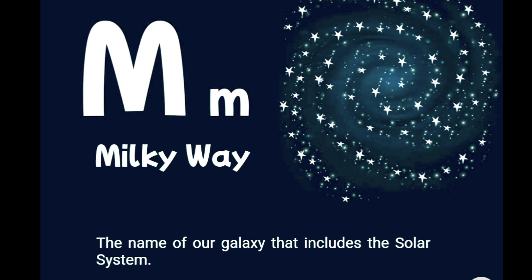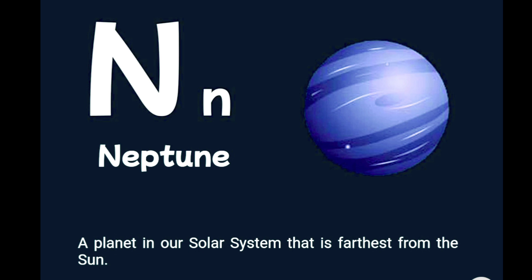M is for Milky Way, the name of our galaxy that includes the solar system. N is for Neptune, a planet in our solar system that is farthest from the sun.